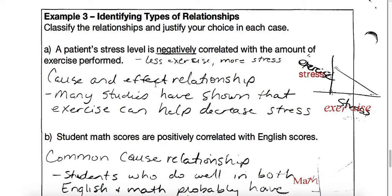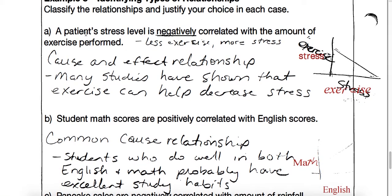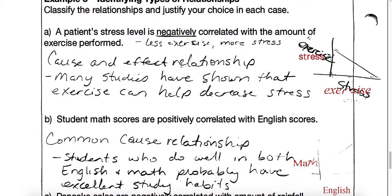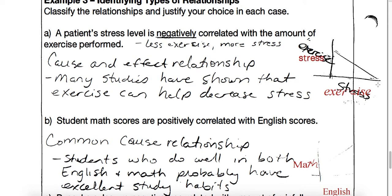In example three, classify the relationships and justify your choice. The variable 'patient stress' would go on the y-axis and 'exercise' on the x-axis. Negatively correlated means the line is going down: the more somebody exercises, the less stress they have. That seems to make sense — many studies have shown that exercise can help decrease stress.